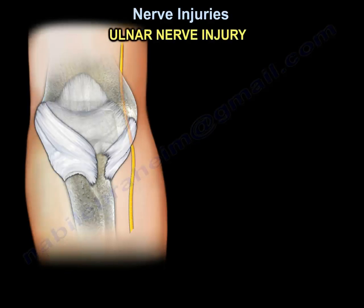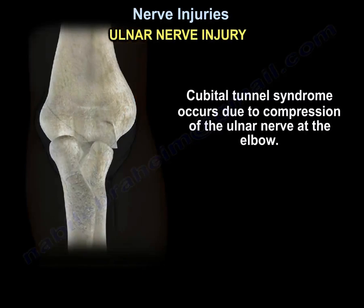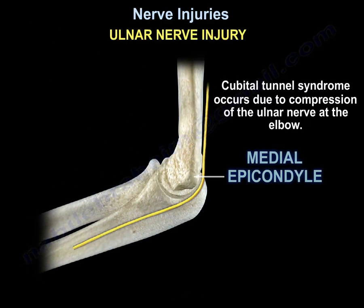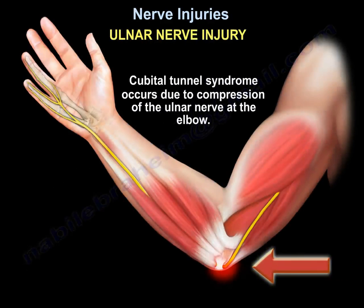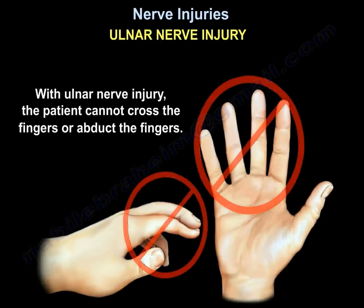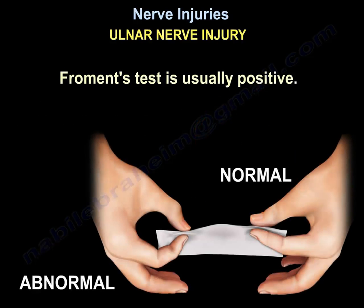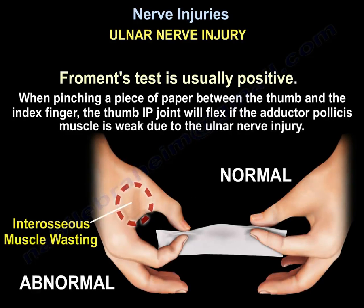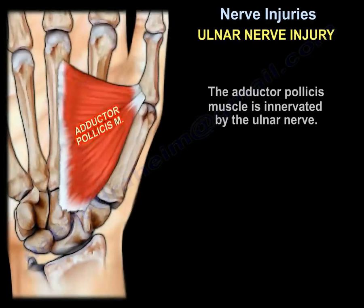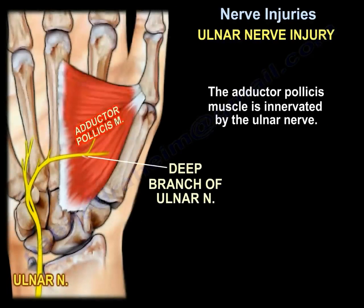Allung nerve injury: cubital tunnel syndrome occurs due to compression of the allung nerve at the elbow. With allung nerve injury, the patient cannot cross the fingers or abduct the fingers. Fromming test is usually positive — when pinching a piece of paper between the thumb and the index finger, the thumb IP joint will flex if the adductor pollicis muscle is weak due to the allung nerve injury. The adductor pollicis muscle is innervated by the allung nerve.